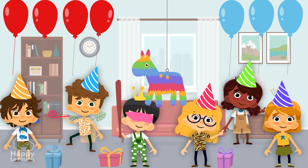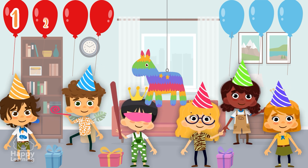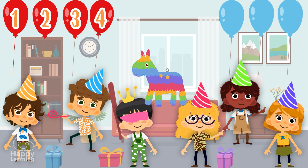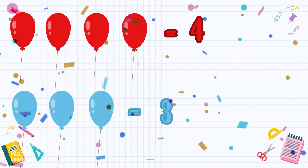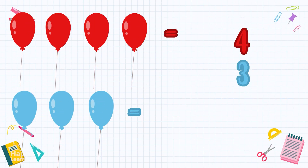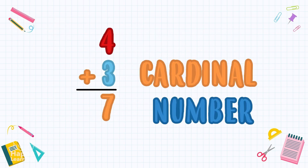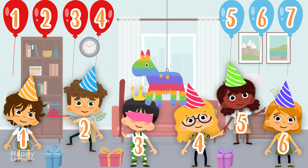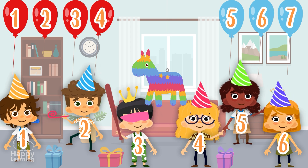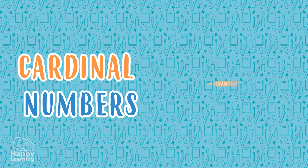Let's add up the balloons to see if there are enough for all of them. We have four red balloons and three blue balloons. If we add four plus three, the total amount is seven — seven balloons in total! The result of this sum is seven, and that seven is a cardinal number. Each child will get a balloon, and there will be one left over. The cardinal numbers indicate quantity.